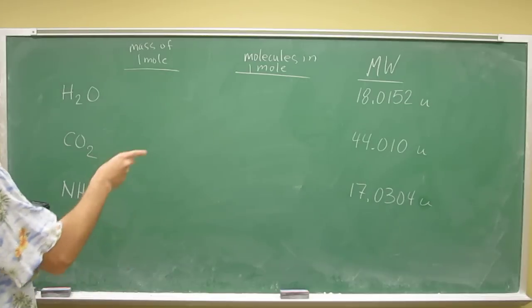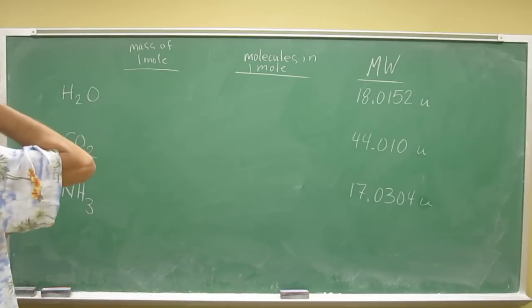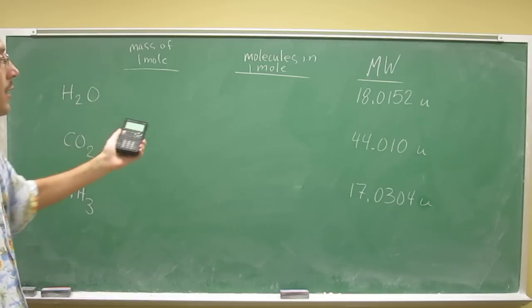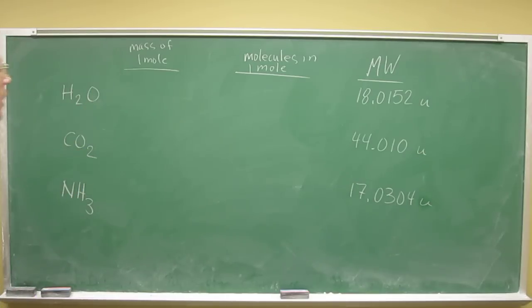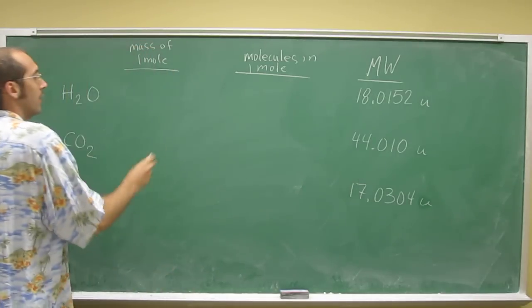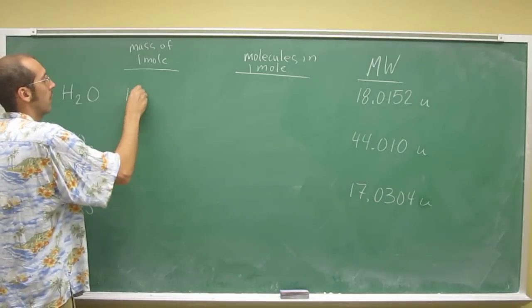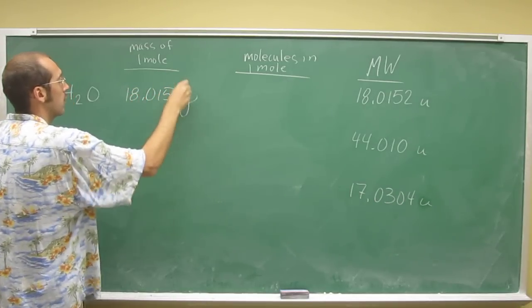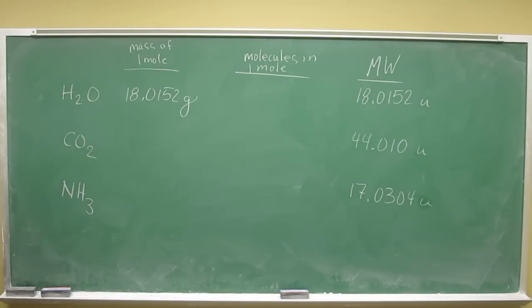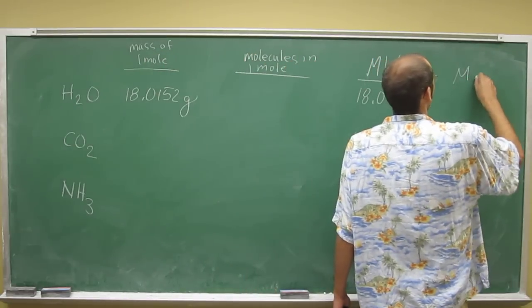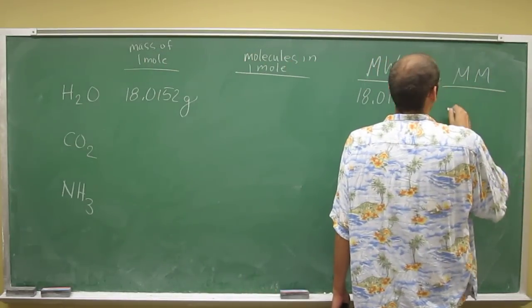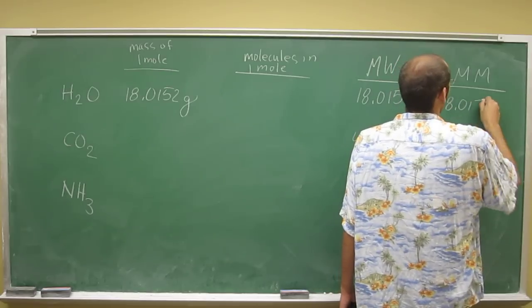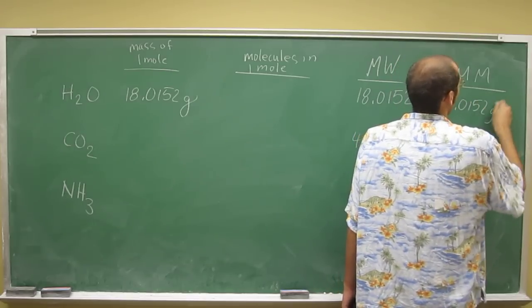So now that we know the molecular weight of each of them, well, the mass of one mole is the same number but different units. So the number is going to be 18.0152, but the units are going to be grams. So we can say the molar mass. Let's do another column. So the molar mass is going to be 18.0152 grams per mole.